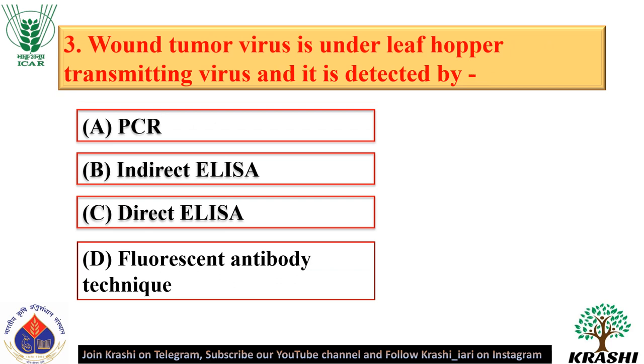Question number 3. Wound tumour virus is under leafhopper transmitting viruses, and it is detected by the fluorescent antibody technique — option D.